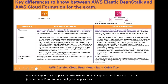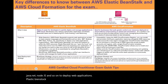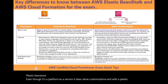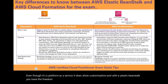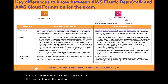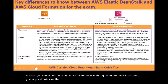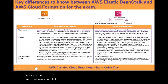Elastic Beanstalk, even though it's a platform as a service, does allow customization. With Elastic Beanstalk you have the freedom to select the AWS resources — it allows you to open the hood and retain full control over the AWS resources powering your application. In case the business decides they want control over some or all elements of their infrastructure, they can do so seamlessly by using Elastic Beanstalk's management capabilities.